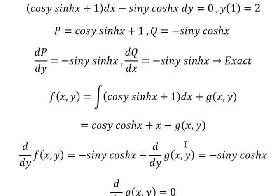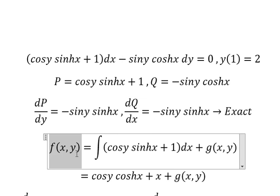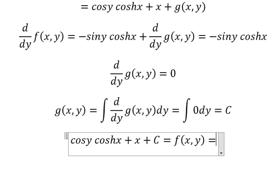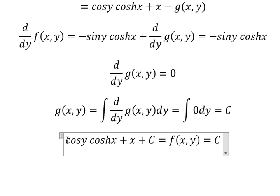And this one equals to this one, and this one equals to C. And now we can simplify like this: cosycoshx plus x equals C.